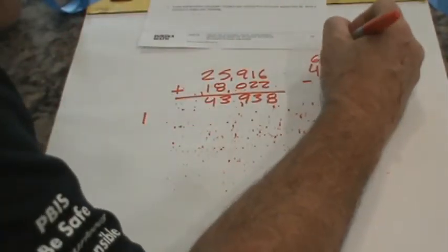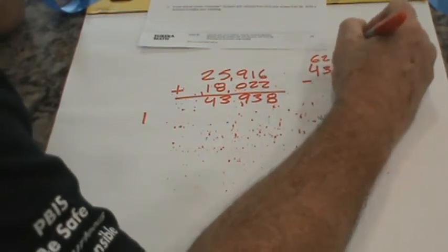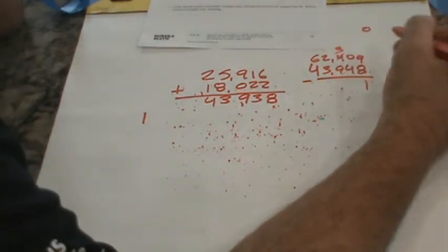So I'm going to put 62,409. And here we go. Nine minus eight is one. I can't take four tens away from zero tens. So I'm going to decompose the hundredths. Bring ten tens over here. Ten minus four is six.